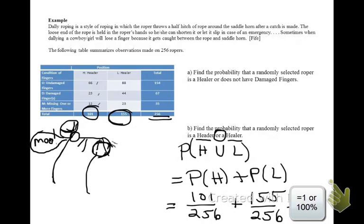These values sum to 1 or 100%. So there's a 100% chance the randomly selected roper either heads or heels.